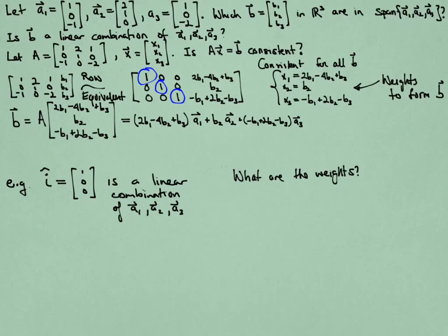So let's figure out which linear combination it is. In other words, what are the weights that go with this particular vector? In this case, our vector B is I, and so B1 is 1, and the other two components are 0. So we use our formulas here above for X1, X2, and X3 for the weights, and we plug in those values of B, and you get 2, 0, and minus 1.